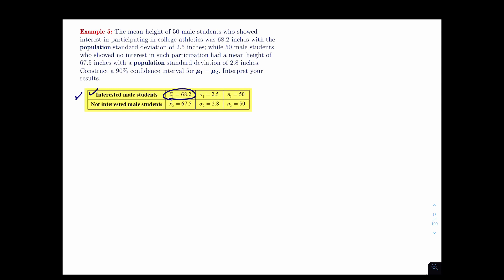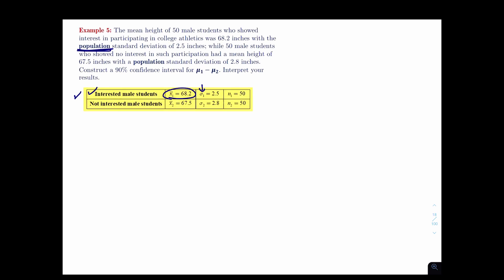The mean height of 50 male students who showed interest in participating in college athletics. So showing interest will be the first set of numbers. Students that show interest in athletics have an average of 68.2 and a population standard deviation of 2.5, sample size is 50. The second population, 50 male students, their sample mean is 67.5, and the population standard deviation is 2.8.